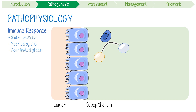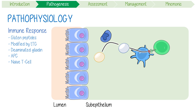The deaminated gliadin then gets picked up by an antigen-presenting cell. Thinking this could potentially be something nasty, the APCs present the gliadin on its serving platter, like HLA-DQ2 or HLA-DQ8, to a naive T-cell. This activates the T-cell and primes it for an immune response.